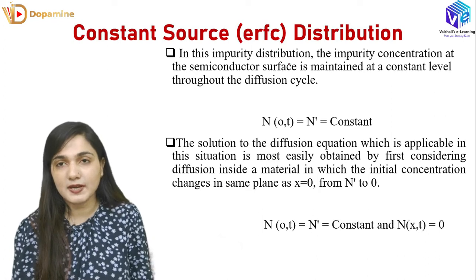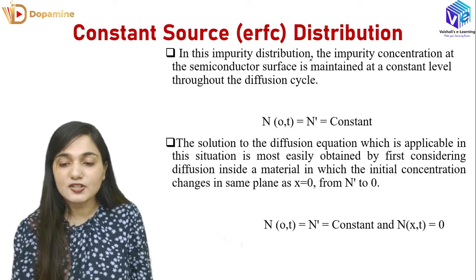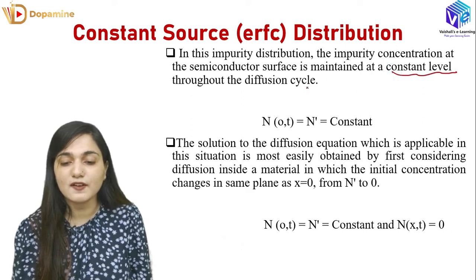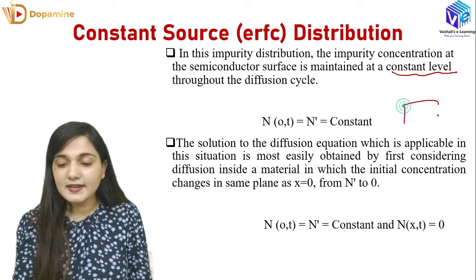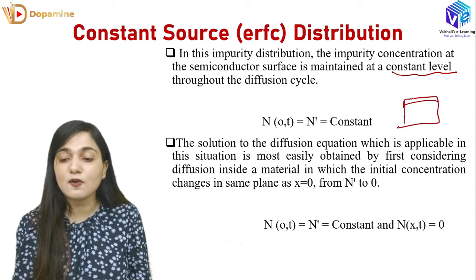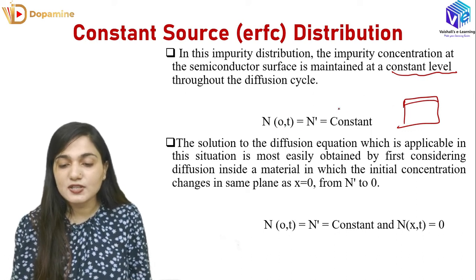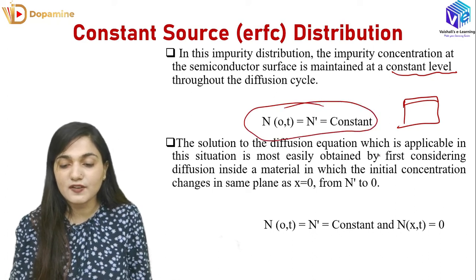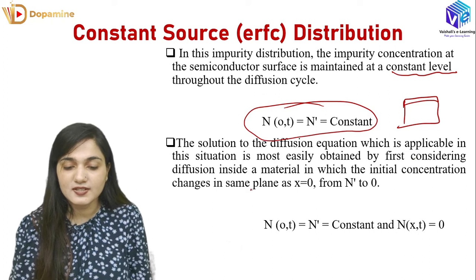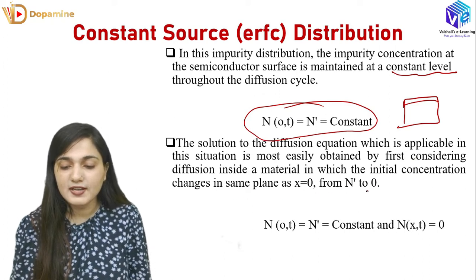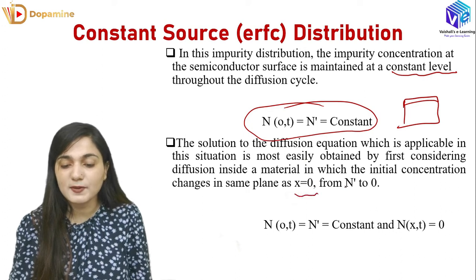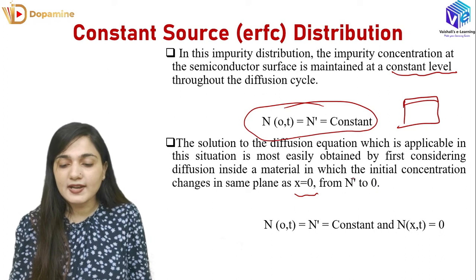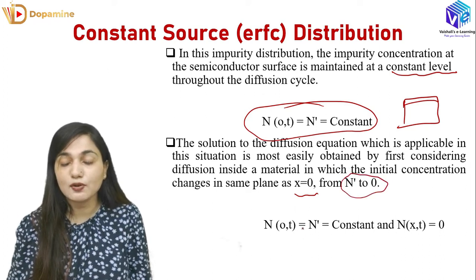In constant source distribution, the impurity concentration at the semiconductor surface is maintained throughout the diffusion cycle. Whether we keep N-type or P-type impurity, the concentration at time T=0 is N-surface, which is constant. The solution to the diffusion equation is most easily obtained by considering diffusion inside a material where the initial concentration changes in the same plane at X=0, from N-surface to 0.